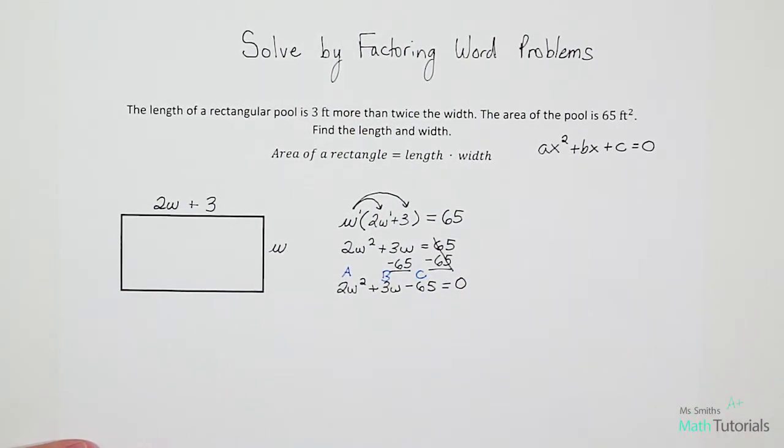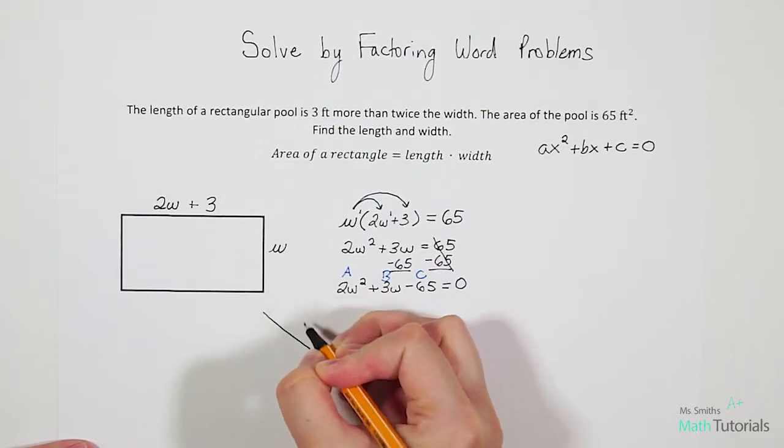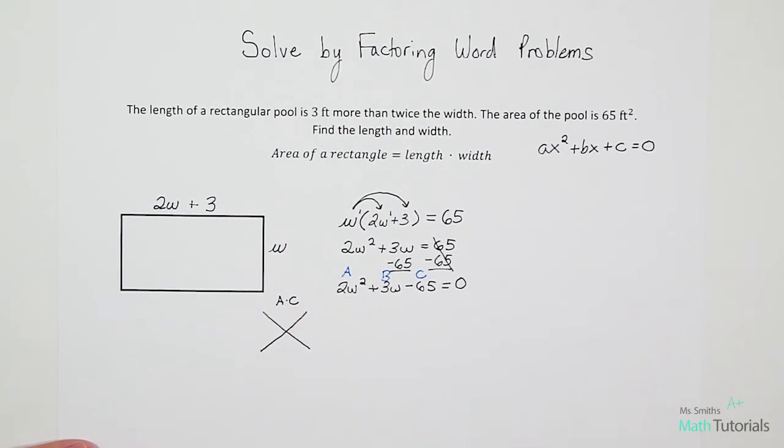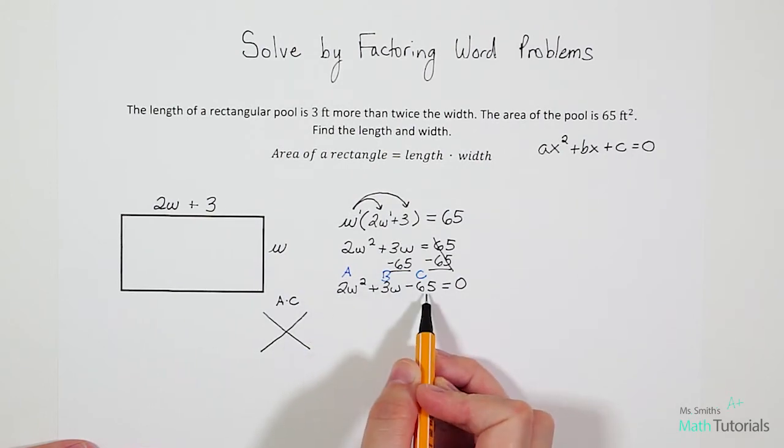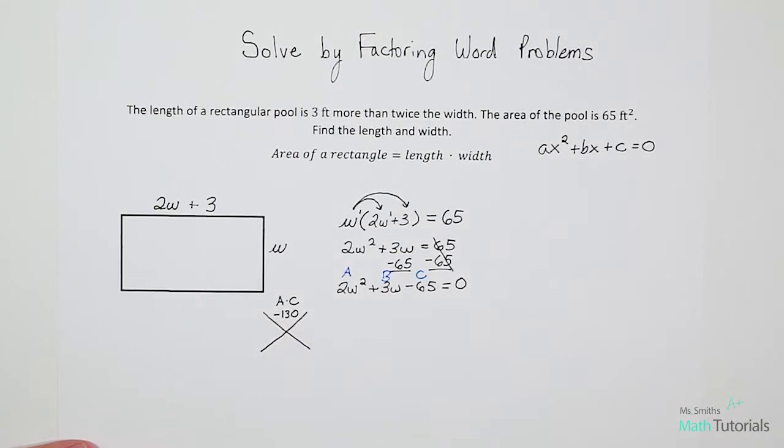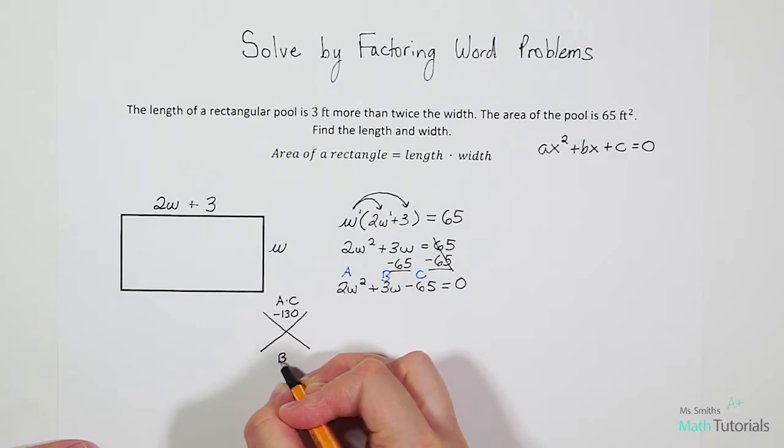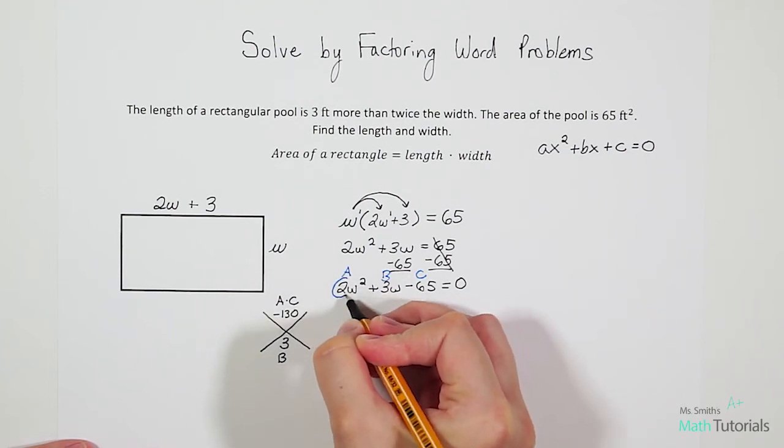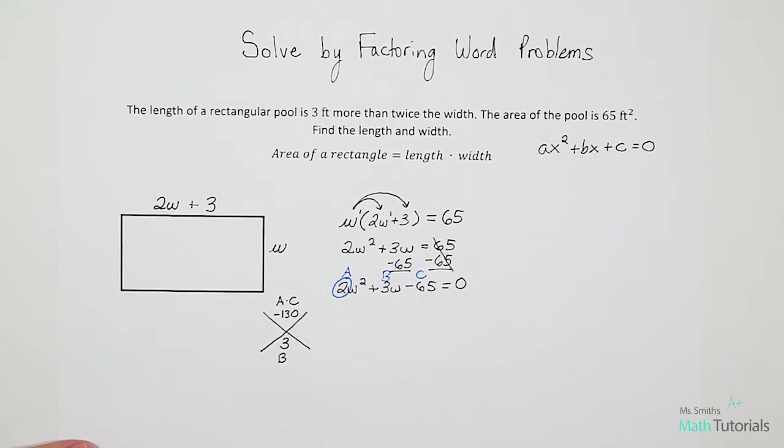So now we can go ahead and build our x. So remember that in the top of our x goes our a times c, which in this case would be 2 times negative 65. That's going to give us negative 130. And then in the bottom goes our b value, which in this case is a positive 3. We do want to take note that our a value is not 1. And when a is not 1 with our divide and slide method, we've got to do a couple extra steps. So what I like to do is circle that a value if it's not 1. It's just a good reminder of the extra steps that I need to complete.